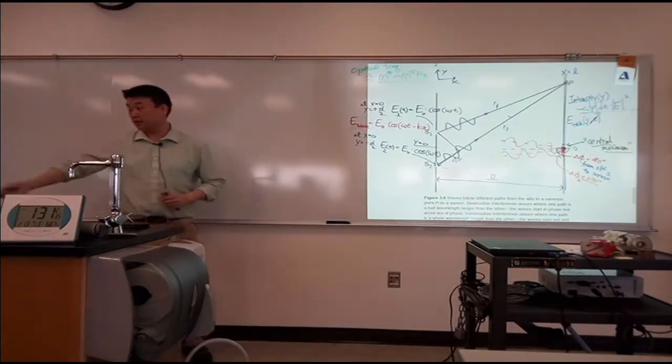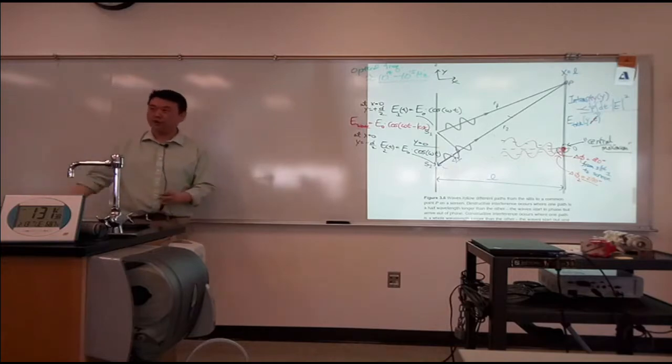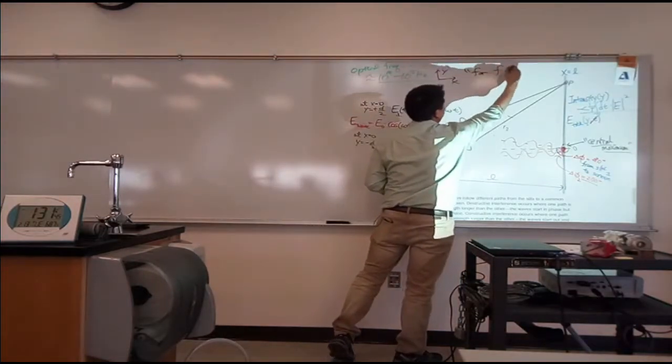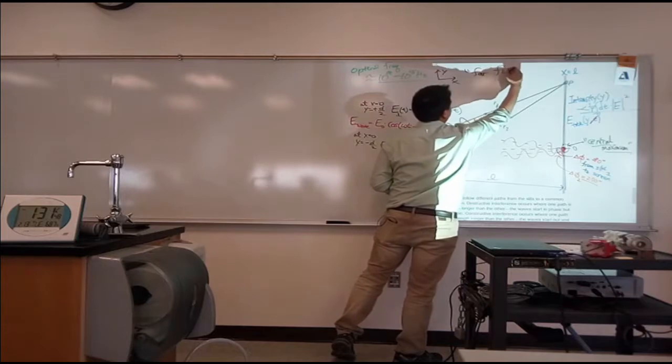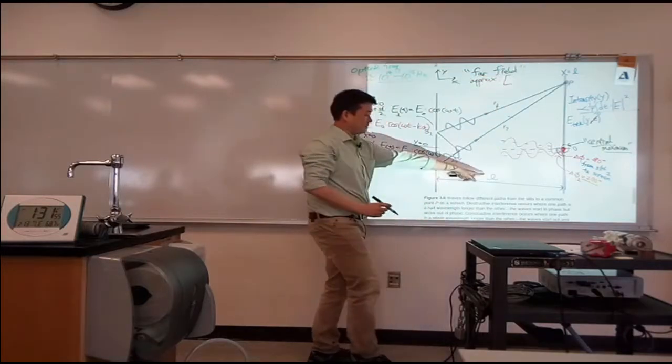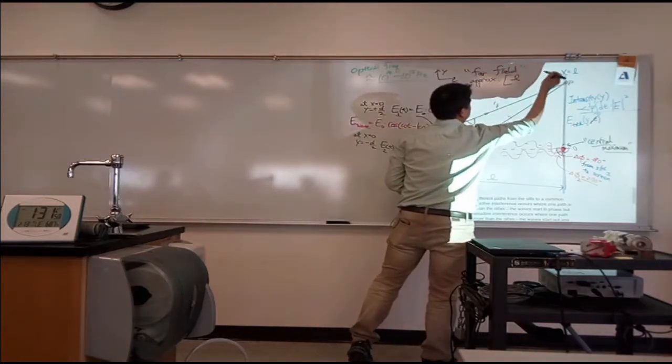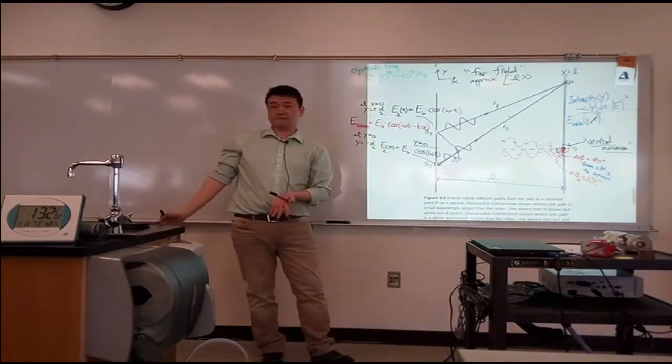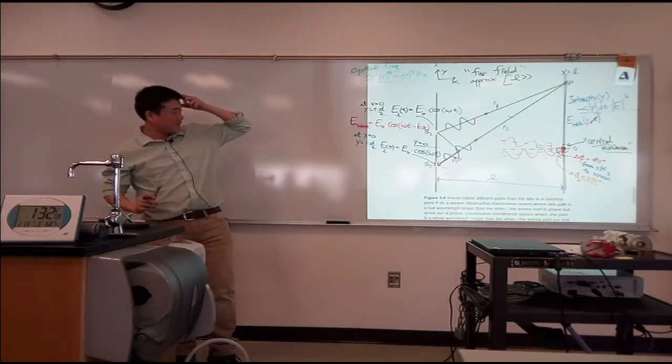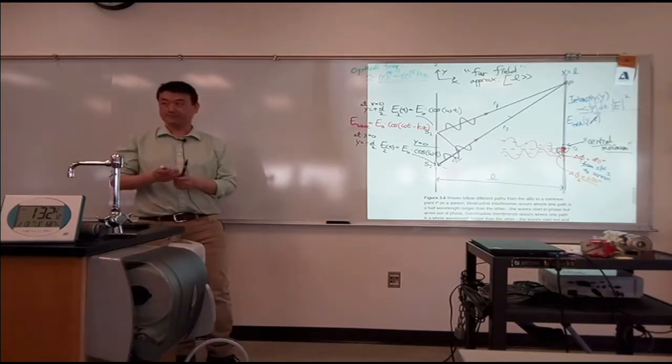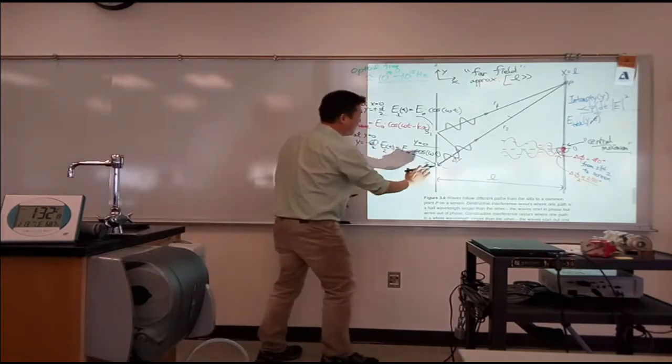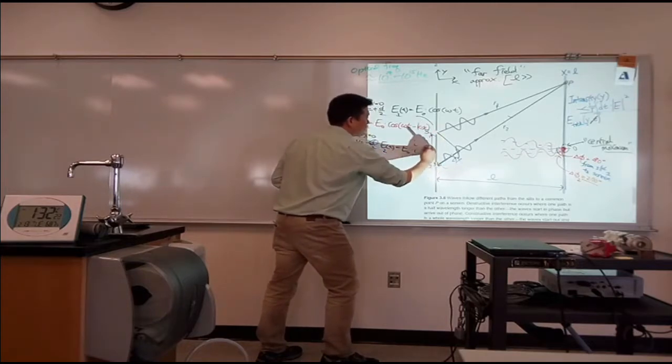Then what I can say is that this distance is the path length difference. This is my delta x. Now, this is the approximation I'm going to make. This is a lower division class. We only do what's called the far field approximation. In case you ever take the upper division version of this, this is called the far field approximation. And the approximation we are making is that this distance to the screen, L, is much greater than some reference length scale.